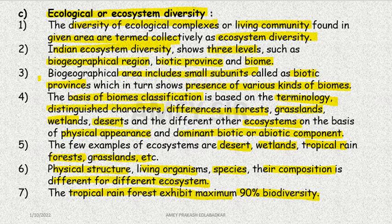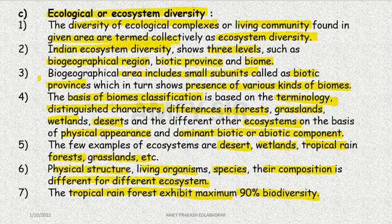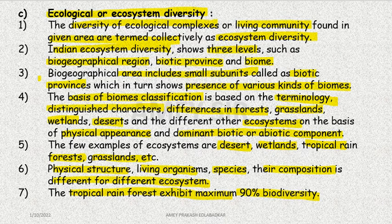Ecosystem diversity in our country — India — is the highest. In comparison, in Norway it will be less, as it is near the Arctic region. Here in India we have deserts, rainforests, deciduous forests, estuaries, and wetlands. Ecosystem diversity in the Western Ghats is much greater than in Ladakh and the Rann of Kutch, where variations are minimal.